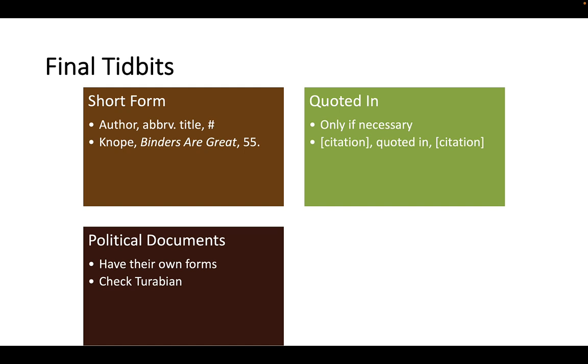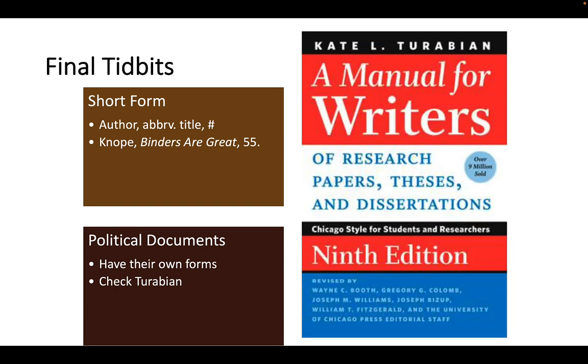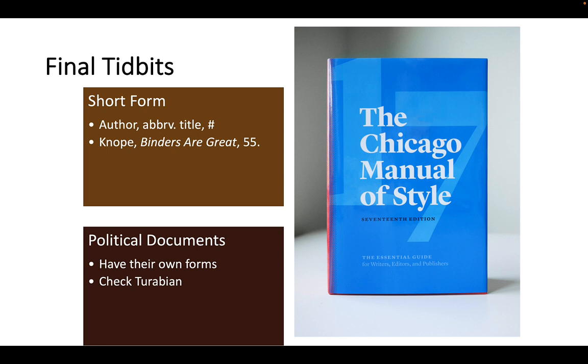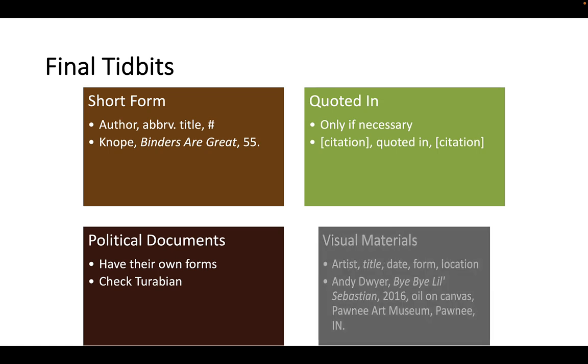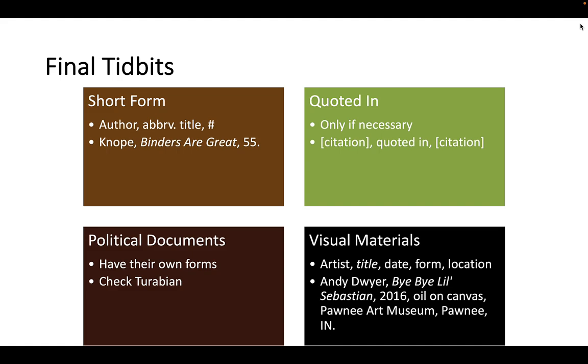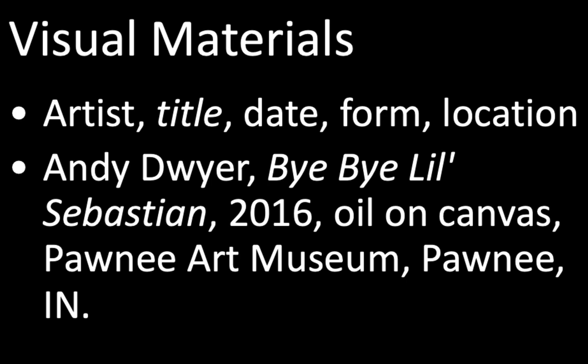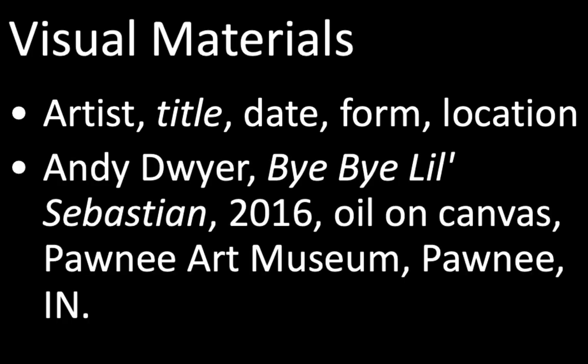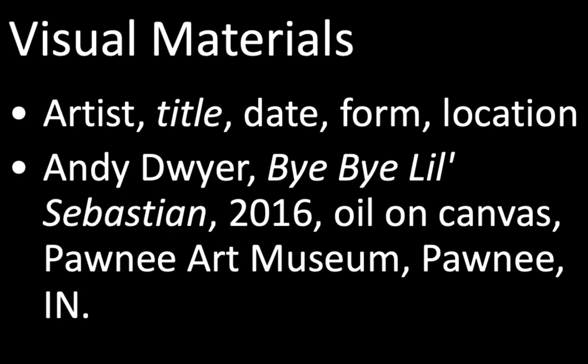Third: political documents like laws or congressional records all have their own citation form. Consult Turabian's Manual for Writers or the Chicago Manual of Style itself for specifics on those. Fourth: for visual materials — citing an artifact or painting — it's actually quite easy. Provide the artist's name, the title of the piece, the date it was created, the form or medium, and the location where it exists now. Example: Andy Dwyer, Bye Bye, Little Sebastian, 2016, oil on canvas, Pawnee Art Museum, Pawnee, Indiana.